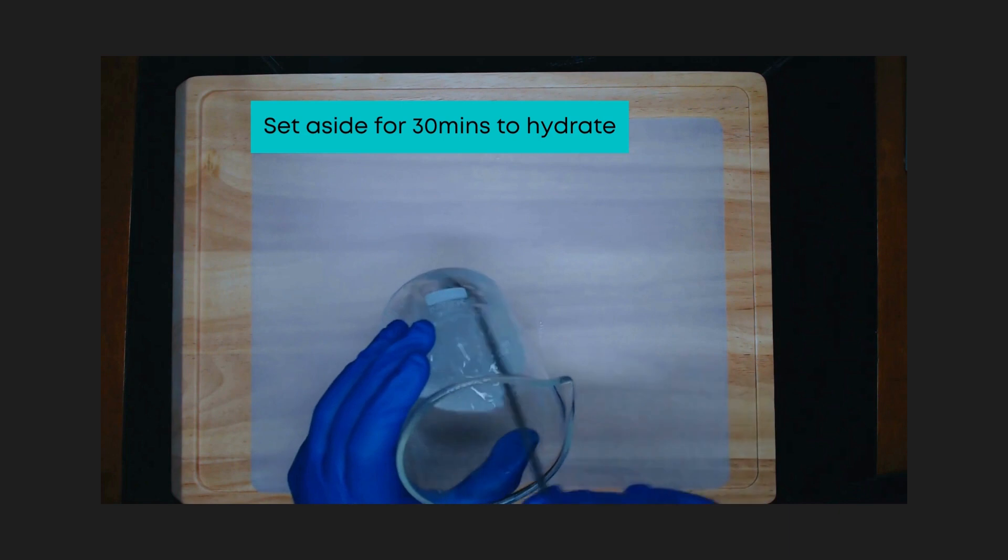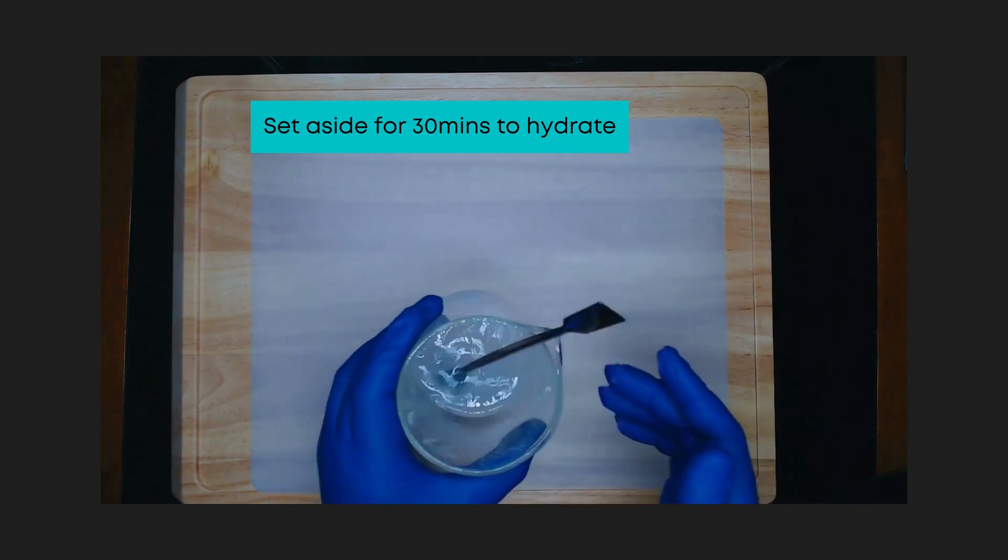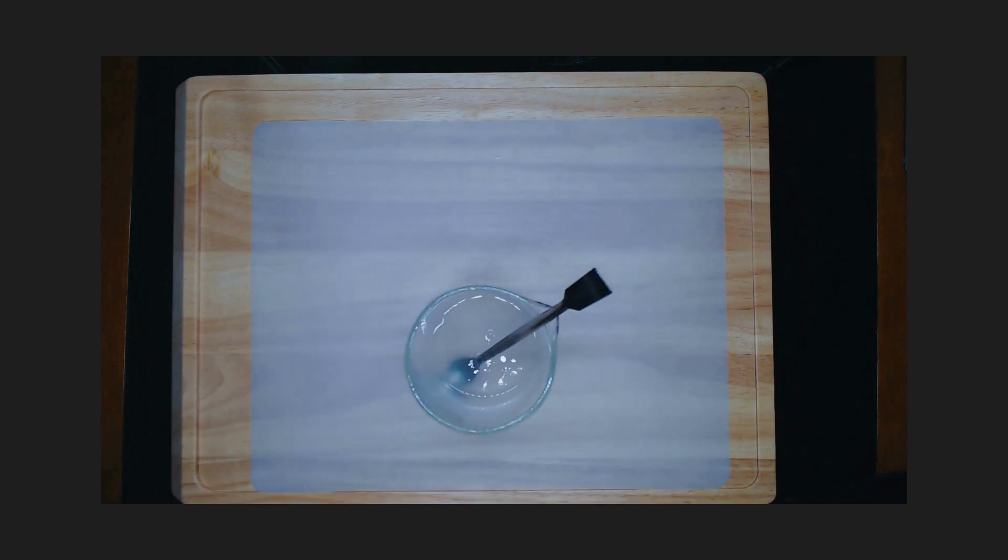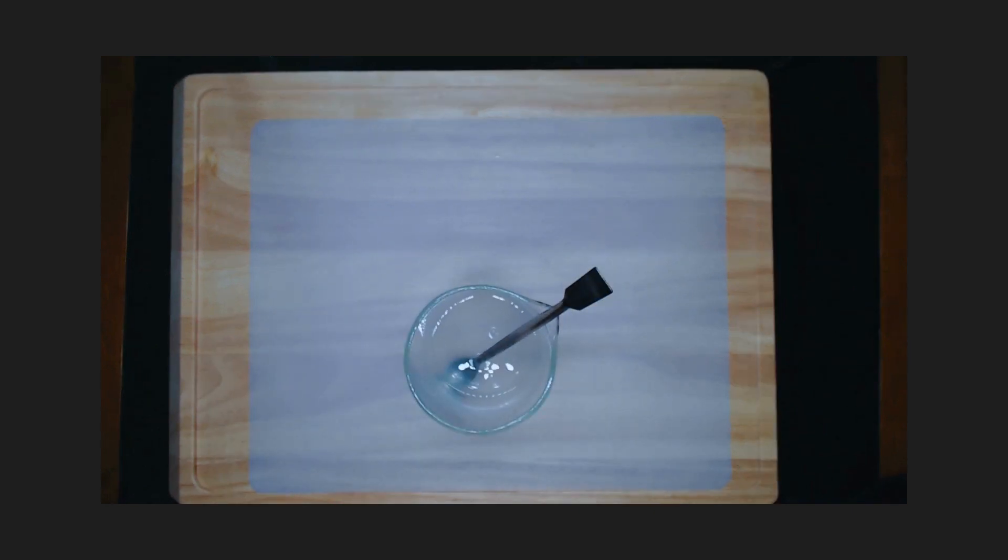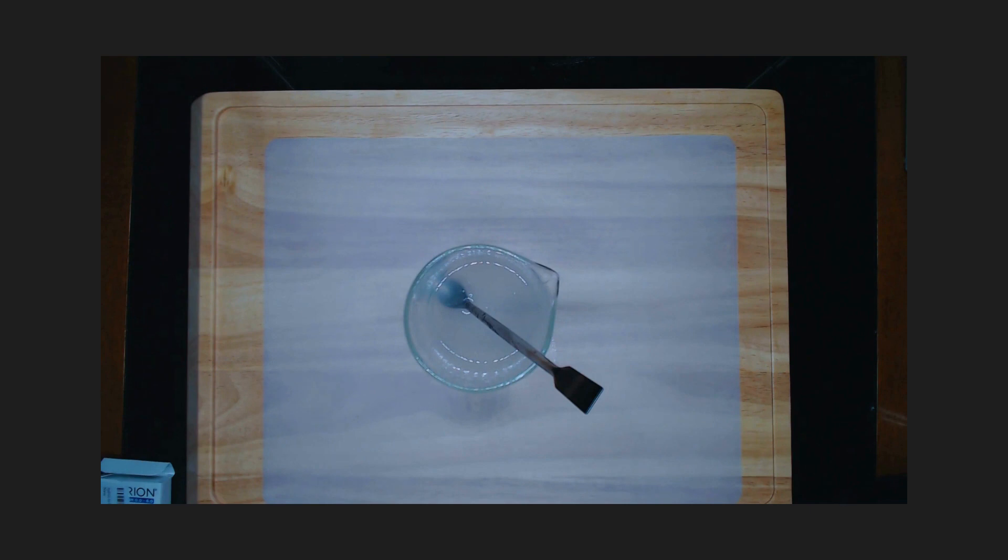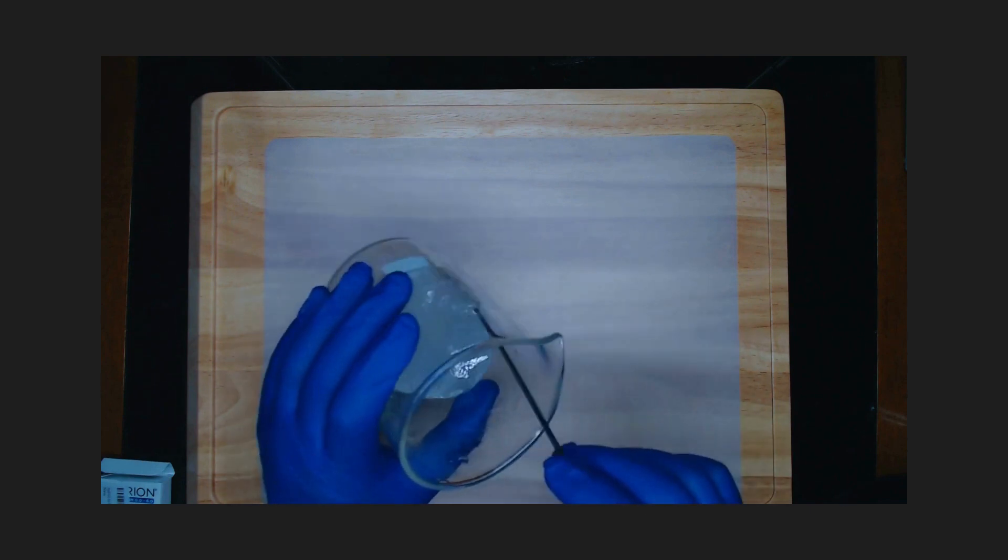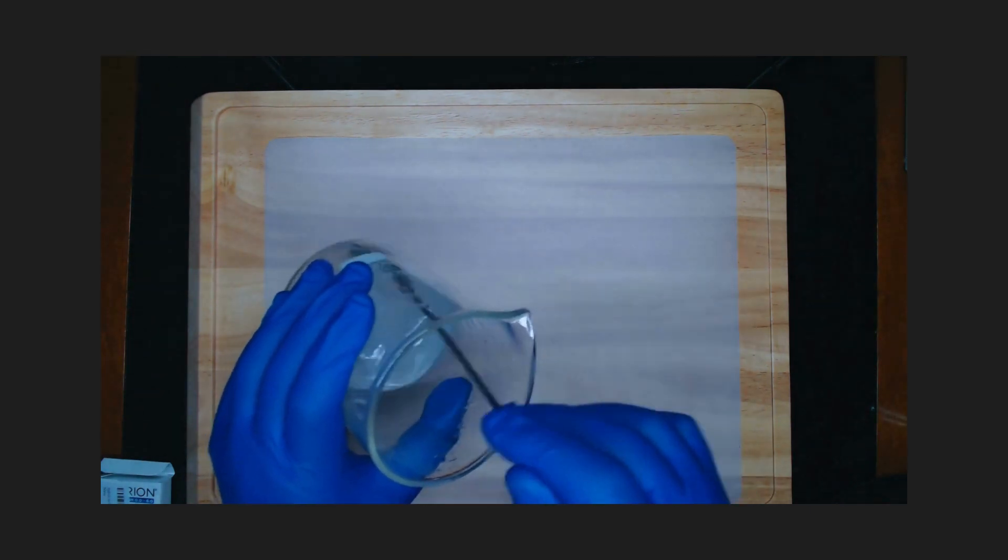Set aside the mixture for 30 minutes. This will allow the xanthan gum to hydrate. After hydration, the mixture will now have a serum consistency.